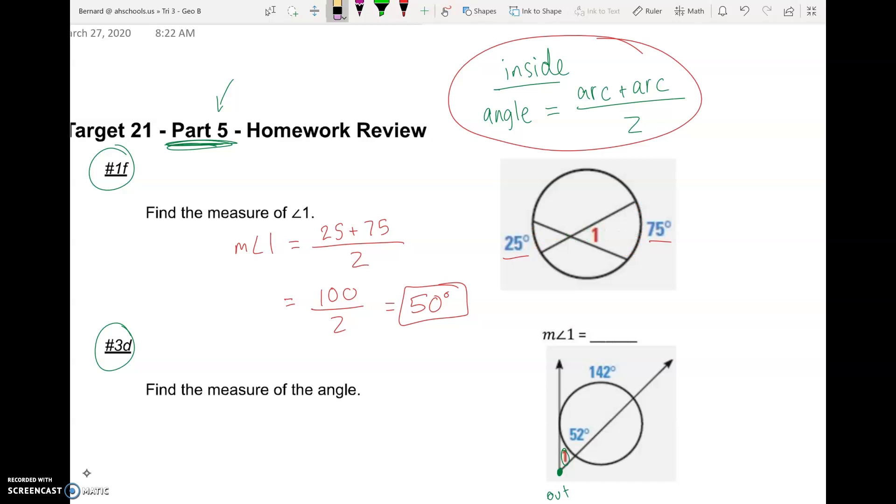Now remember, I'm going to put this into our circle, angle 1 is 50. Remember, vertical angles equal each other, so the other side is 50 as well. So that's kind of how that works. All right, let's do 3D.